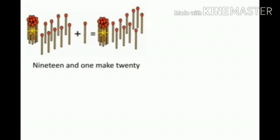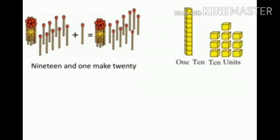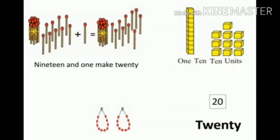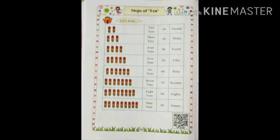Here, 1 bunch of math sticks is there — that is, 10 math sticks. With 9 math sticks, 19 plus 1 math stick equals 20 math sticks. 19 and 1 make 20. The 10-group of blocks is 1 ten and 10 blocks is 10 units. 2 strings of bits is 2 tens. That is, 20, and the spelling of 20 is T-W-E-N-T-Y.